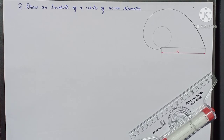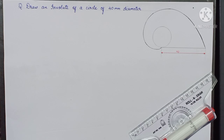Today we practice how to draw an involute of a circle. An involute is a curve traced by the free end of a thread unwound from any polygon.